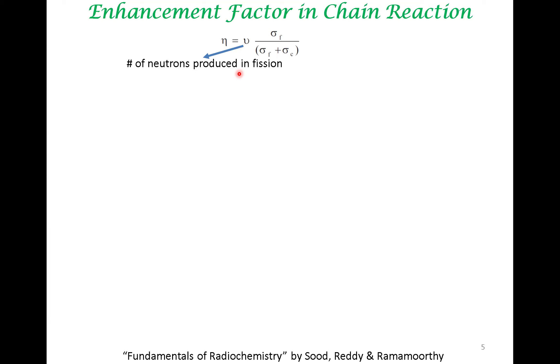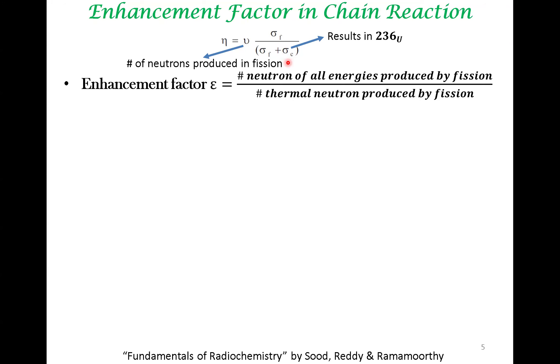But all neutrons that are present do not just go into fission. It can also be captured by U235 without initiating fission. Sigma_c refers to cross-section for capture of neutrons without initiating fission. This just results in the formation of U236. There is no fission involved. This is not advantageous for sustaining chain reaction.